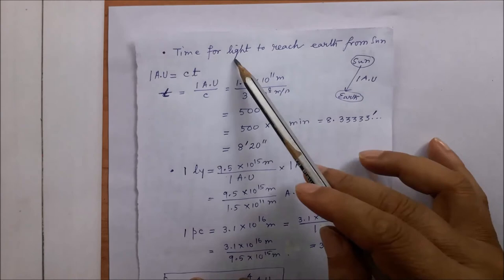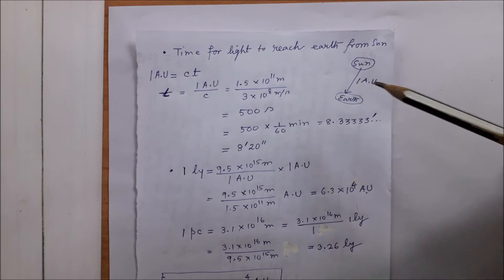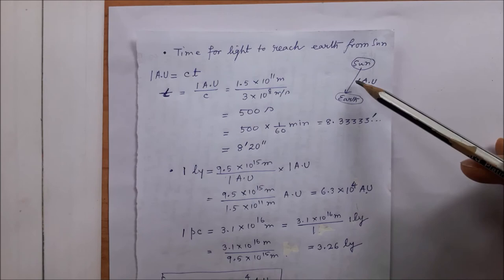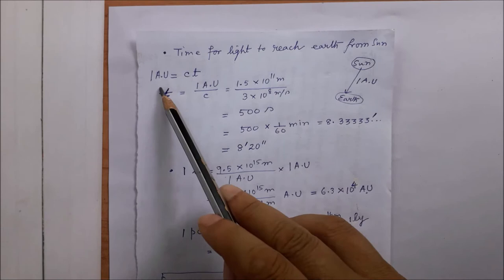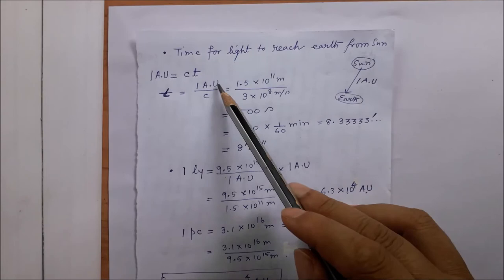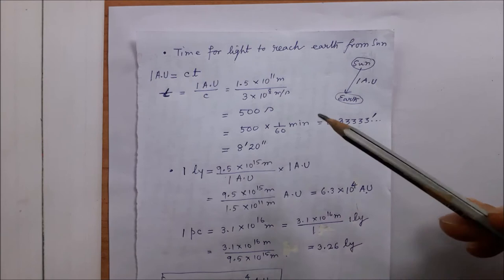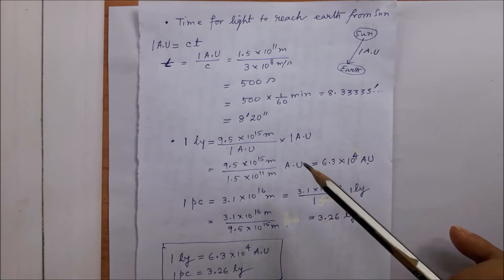Let us check whether our calculations are correct by evaluating the time taken by light to reach from Sun to Earth, which we know to be 8 minutes 20 seconds. Since light travels this distance with speed c (3 times 10 to the power 8 meters per second), we use distance equals velocity times time, so time equals distance divided by speed. Distance is one astronomical unit, and dividing by c we end up with 8 minutes 20 seconds — so our figures are correct.